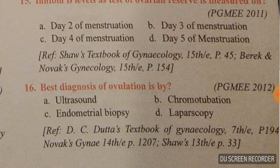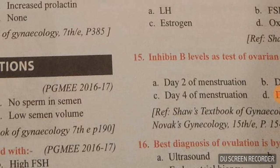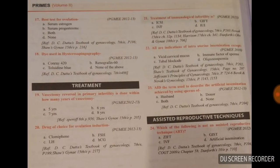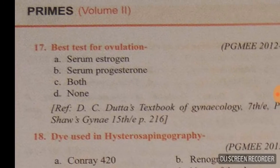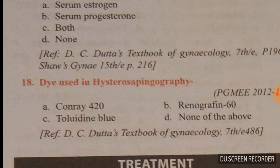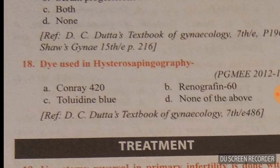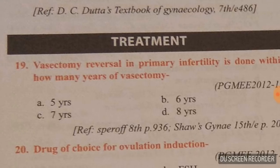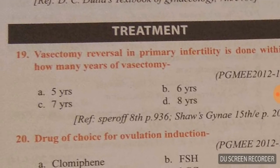Question sixteen: best diagnosis of ovulation is by ultrasonography — USG, option A is right. Best test for ovulation is serum progesterone — option B is right. The dye used in hysterosalpingography is Urografin 60 — memorize this, no tricks here.